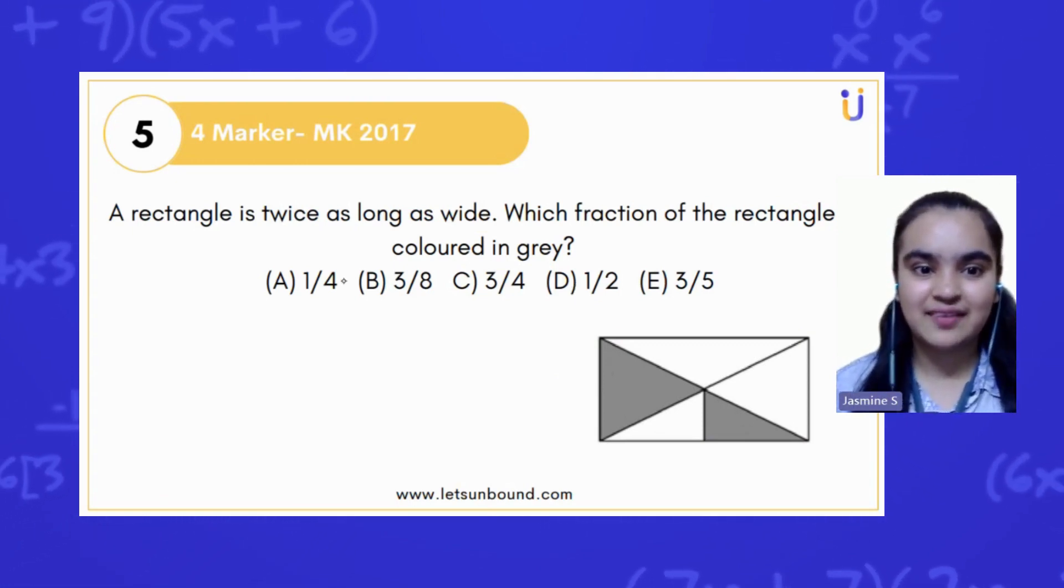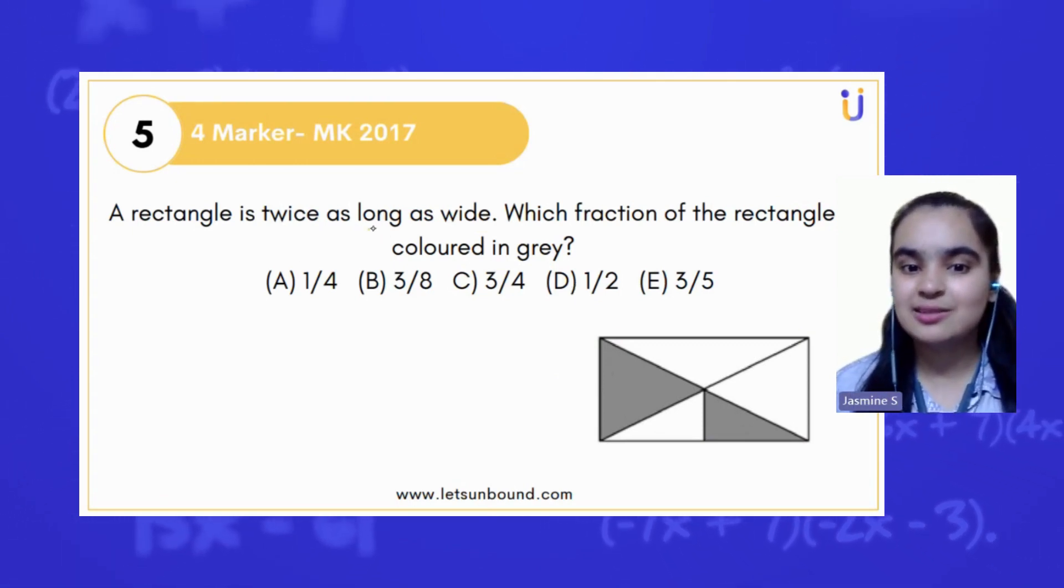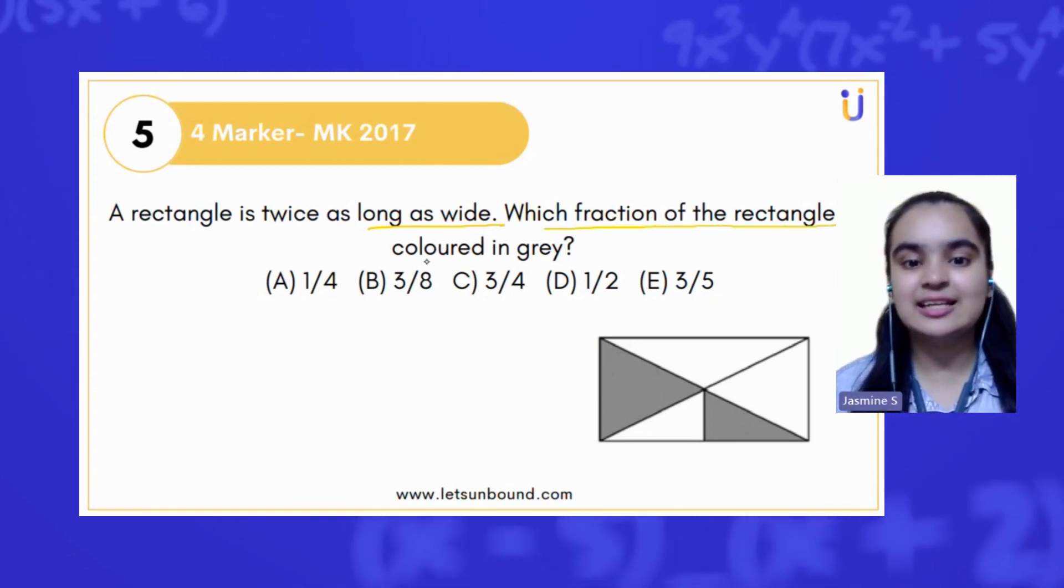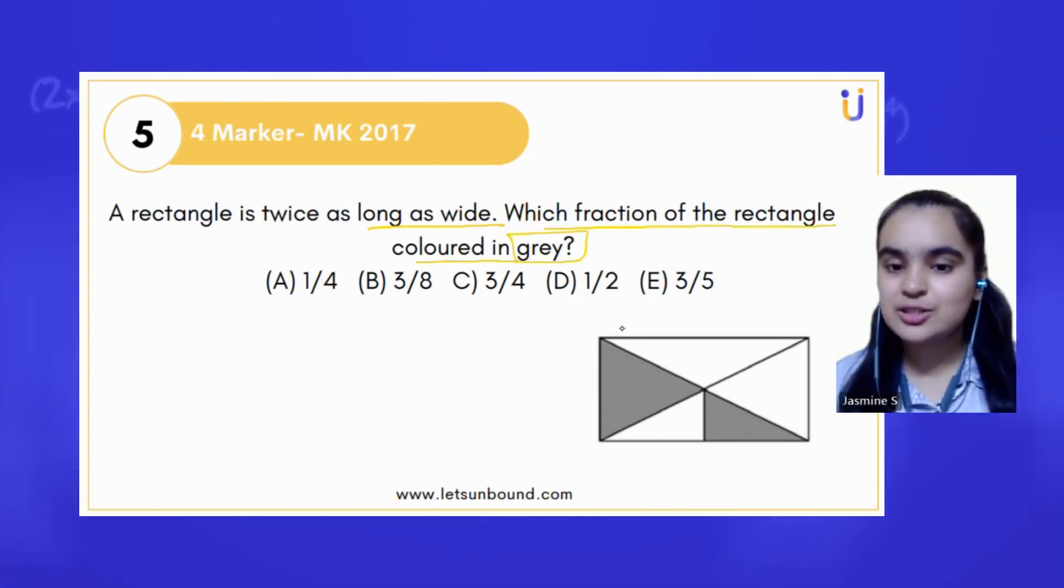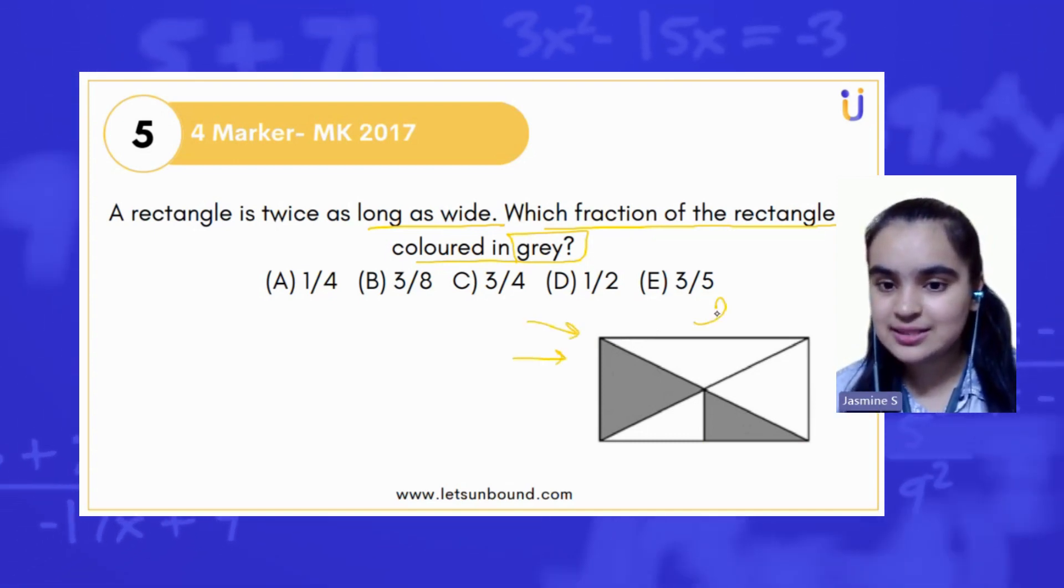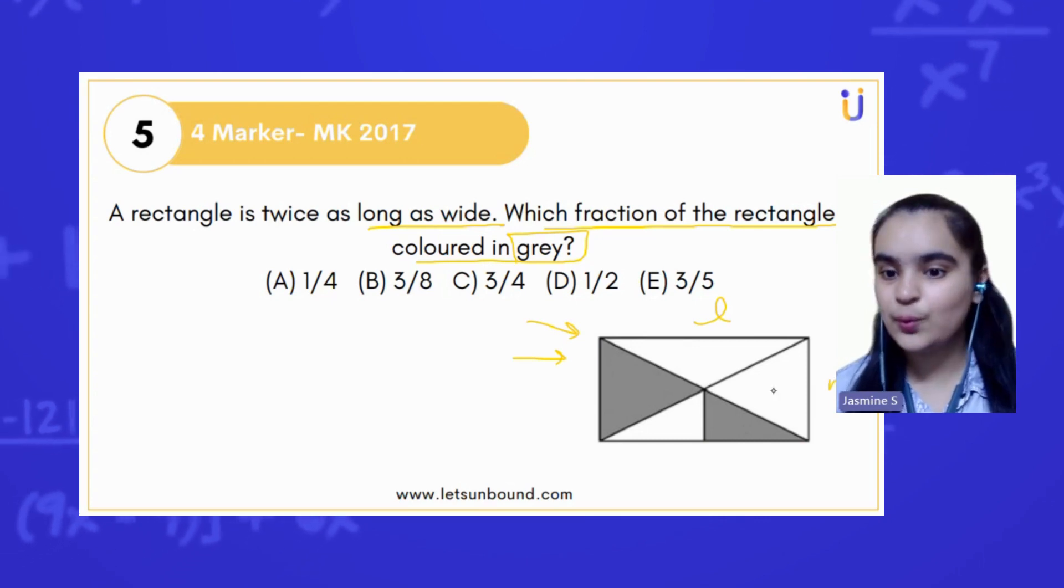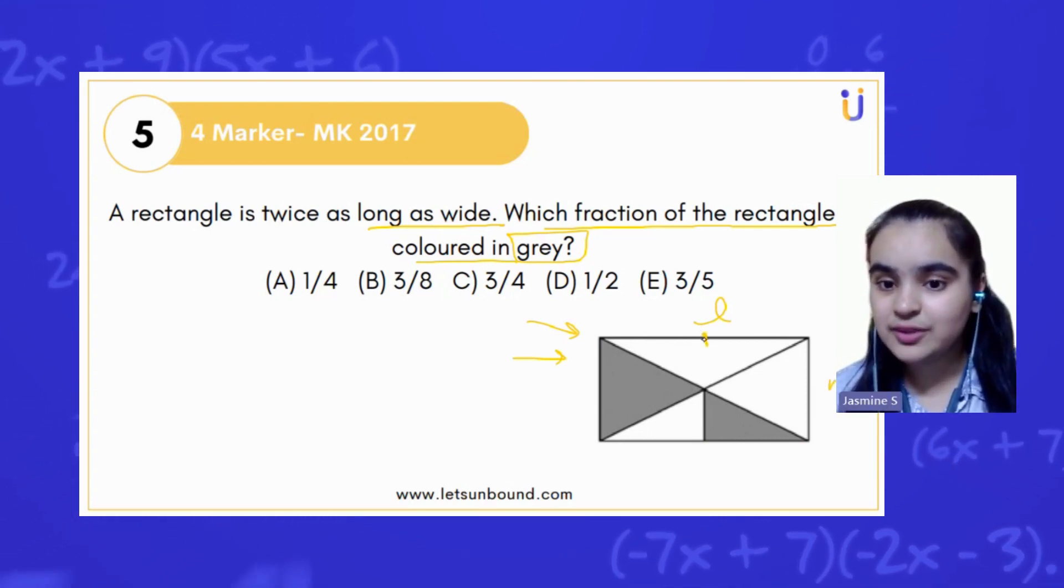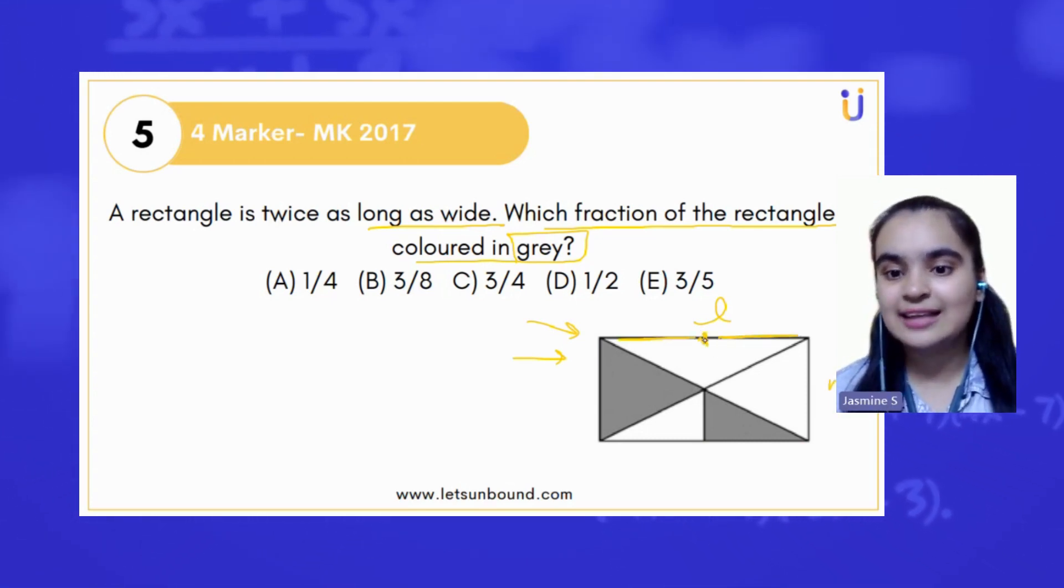Here is the question. A rectangle is twice as long as wide. Which fraction of the rectangle is colored in gray? For example, here is the figure that they have provided to us. This is length and this is width. The length of the rectangle is twice as long as the width.